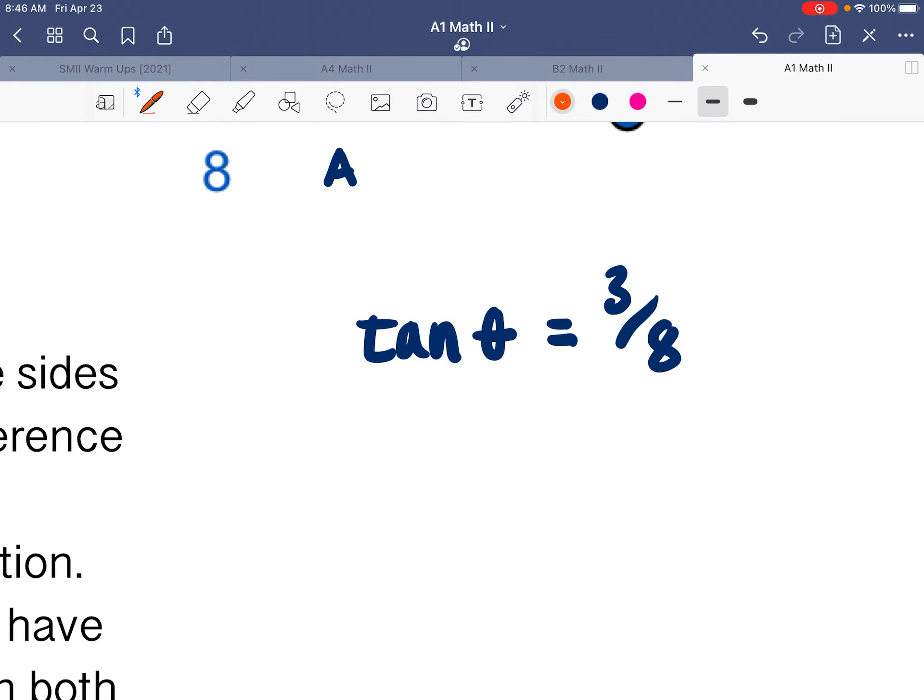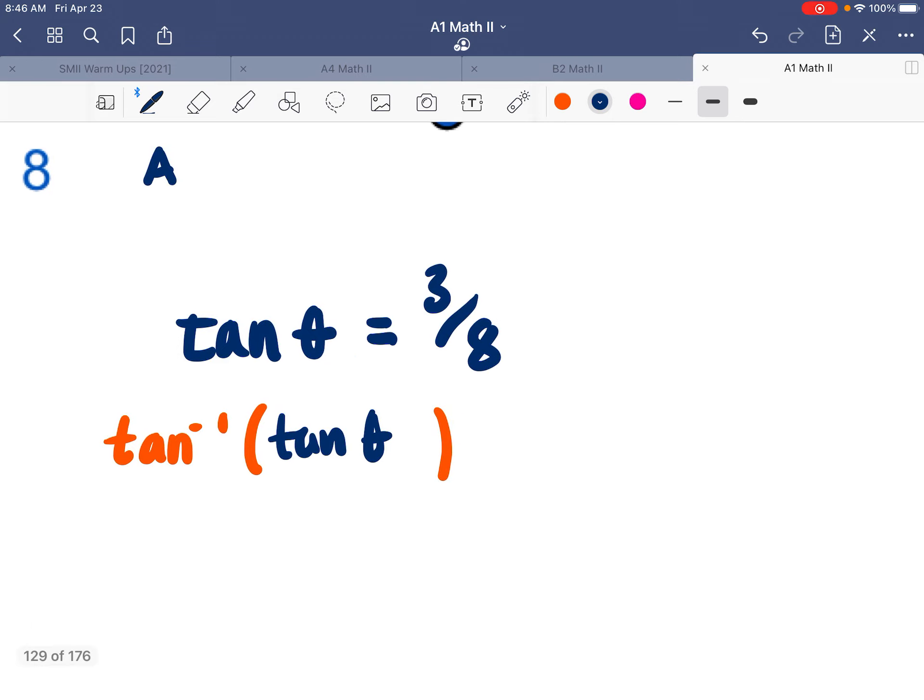So I'm going to write this algebra step only on this problem, because for most of them, this step is kind of inferred. But what we're really doing is we're taking tangent inverse of both sides of our equation. On this side, we have tangent inverse of tangent, which is like undoing. And then on this side, we have tangent inverse of 3 eighths.